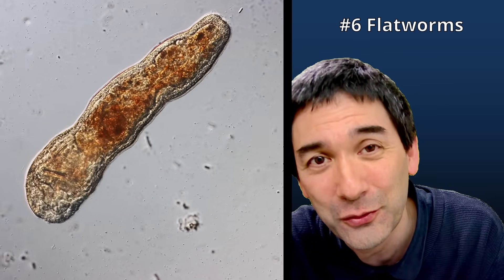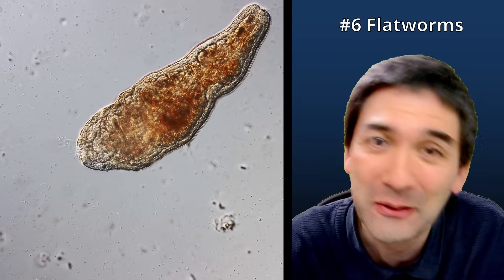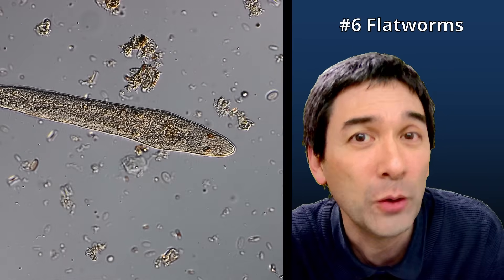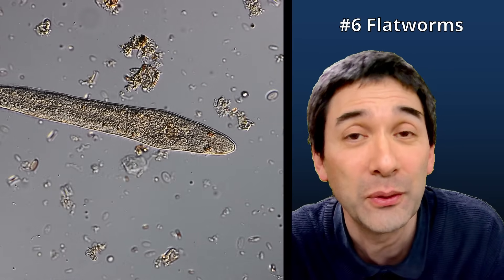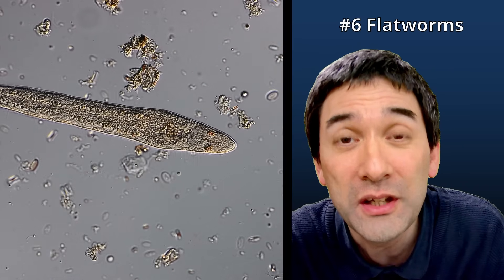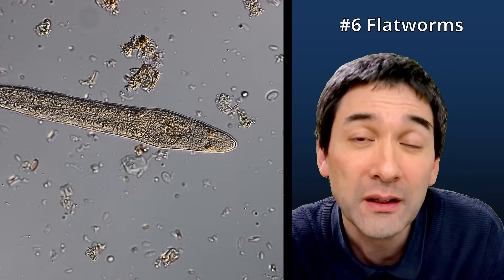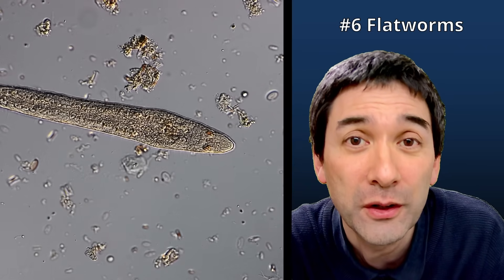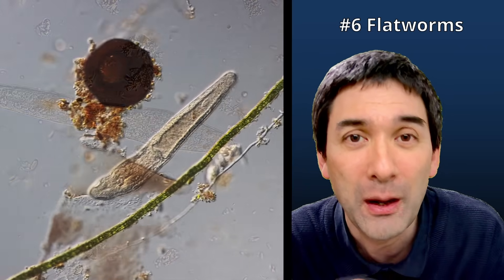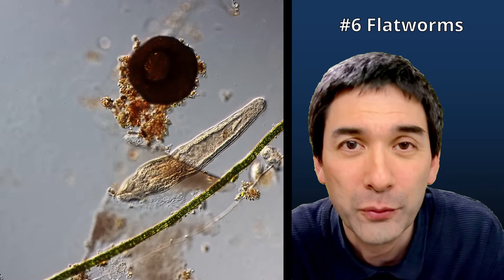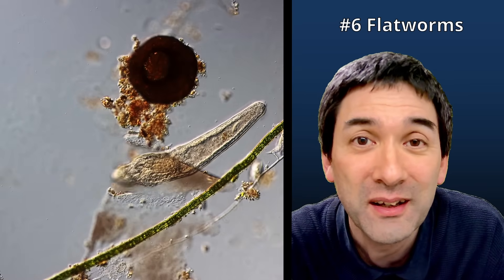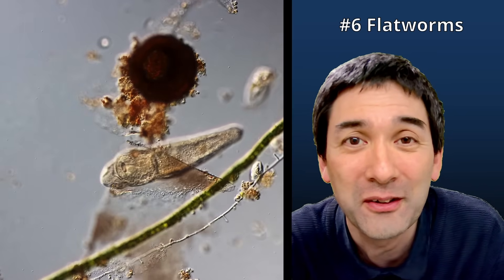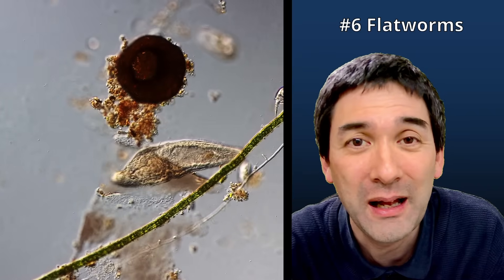This is a flatworm — again an animal, so we're jumping between multicellular and single-cellular organisms. Flatworms are completely smooth, unlike the oligochaete worms shown before. They are quite aggressive hunters; they have a mouth and are able to take up food — usually eating other cells like paramecia. Then they spit out the undigested material again.